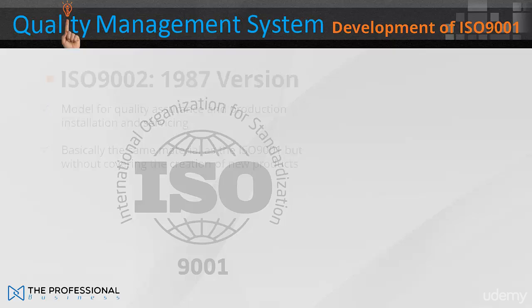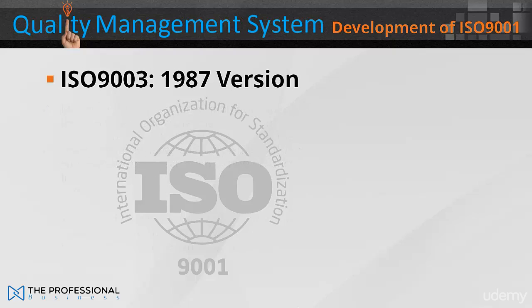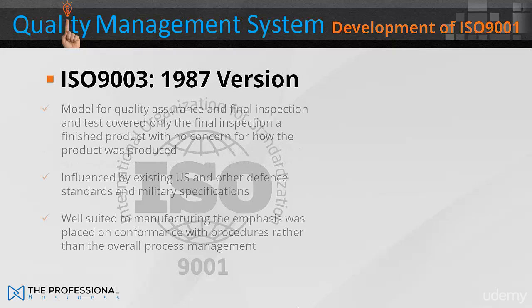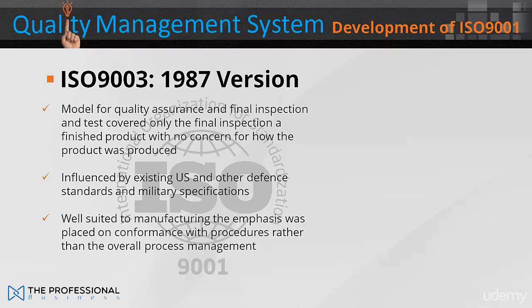The ISO 9003 1987, model for quality assurance in final inspection and test, covered only the final inspection of finished products, with no concern for how the product was produced.